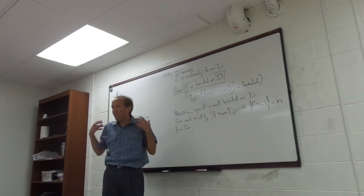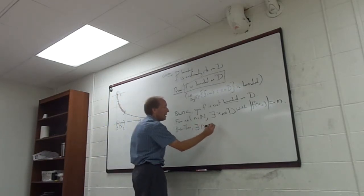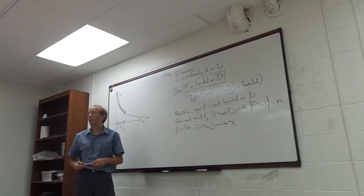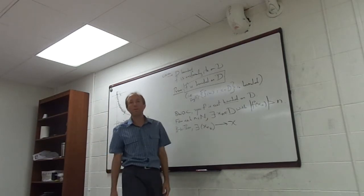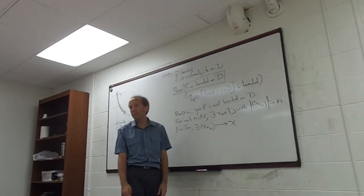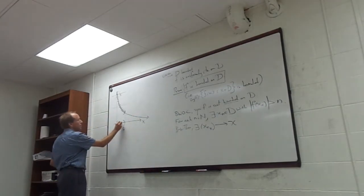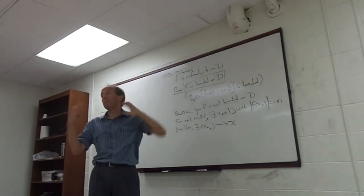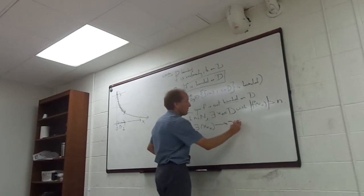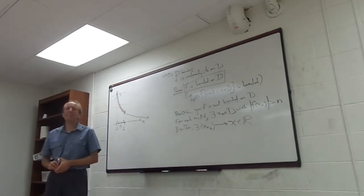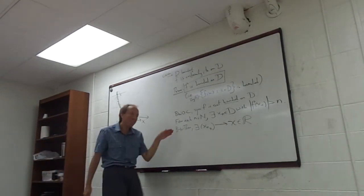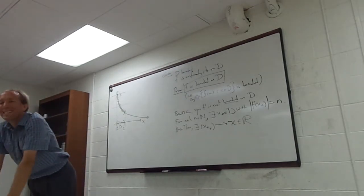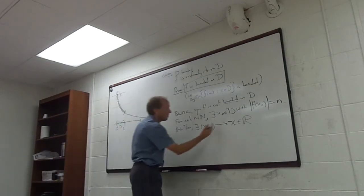We have a convergent subsequence x_{n_k} converging to x. Where does x live? It doesn't have to live in D — if d was a closed interval I would grant that, but it's not necessarily a closed interval, and there's nothing that even says D is an interval; it's just a bounded domain. Do we actually care that it's converging to a particular point? No — because we just want it to be Cauchy. Any sequence that converges is Cauchy, so x_{n_k} is Cauchy.